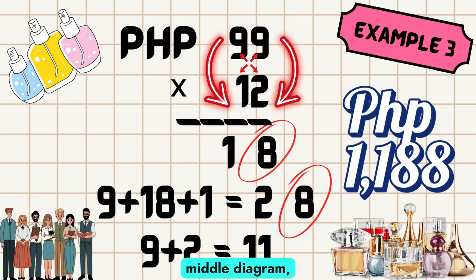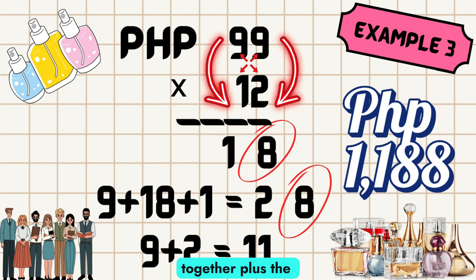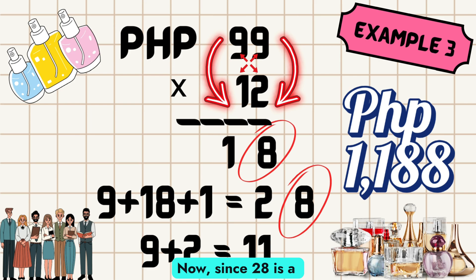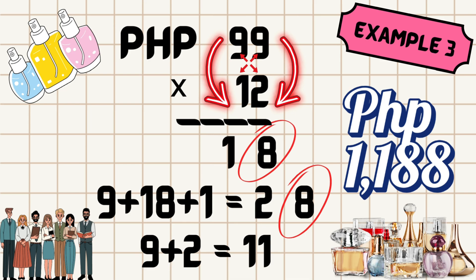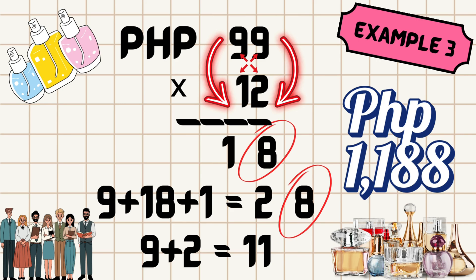Following the middle diagram, multiply 9 times 1 and 9 times 2, which equals 9 and 18 respectively. Add these two together plus the carry 1, and the sum is 28. Since 28 is a two-digit number, keep the 8 and carry the 2. Finally, let's move to the left column: 9 times 1 equals 9, then add the carry 2, so 9 plus 2 equals 11. So the answer to 99 times 12 equals 1,188.